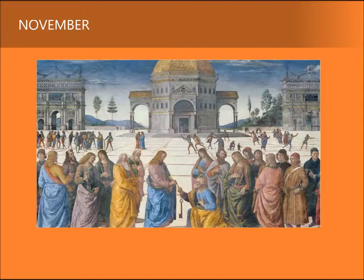Perugino invests the episode with a sober dignity and grandeur. According to ancient tradition the keys symbolised the power given to St. Peter to forgive sins. The influence of classically inspired artistic ideals of clarity and symmetry find a near-perfect formulation in Perugino's composition. In the background, buildings inspired by antiquity establish a visual sense of grandeur and symmetry. Similarly, the orderly arrangement of Christ and the Apostles across the foreground of the picture plane enhances a mood of measured calm. Christ and St. Peter literally take centre stage in their meeting.